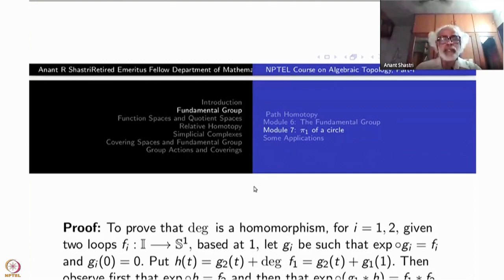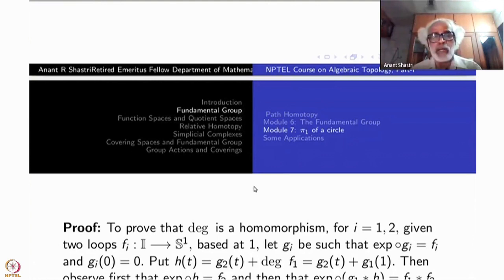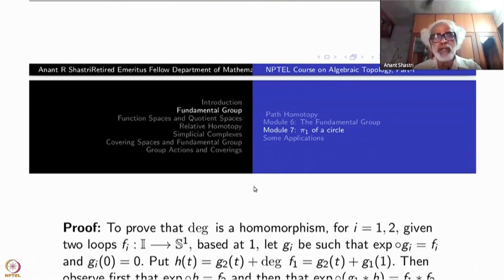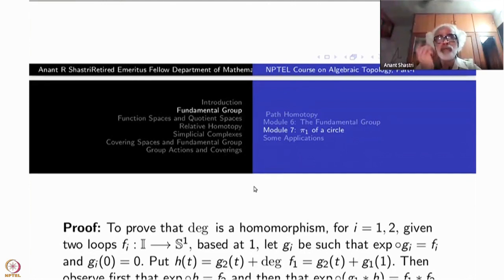After taking the lifts, what we want to do is take H(t) to be G2(t) plus degree of F1 — add that number. Then you shift G2 by a constant, namely degree of F1. If you shift a lift by a constant, namely an integer, it will still be a lift — it will still be a lift of the same function — namely exponential of H(t) is the same as exponential of G2, which is F2. The degree of F1 is an integer, and e raised to 2πi times an integer is always 1, so it gets multiplied by 1 and does not change.